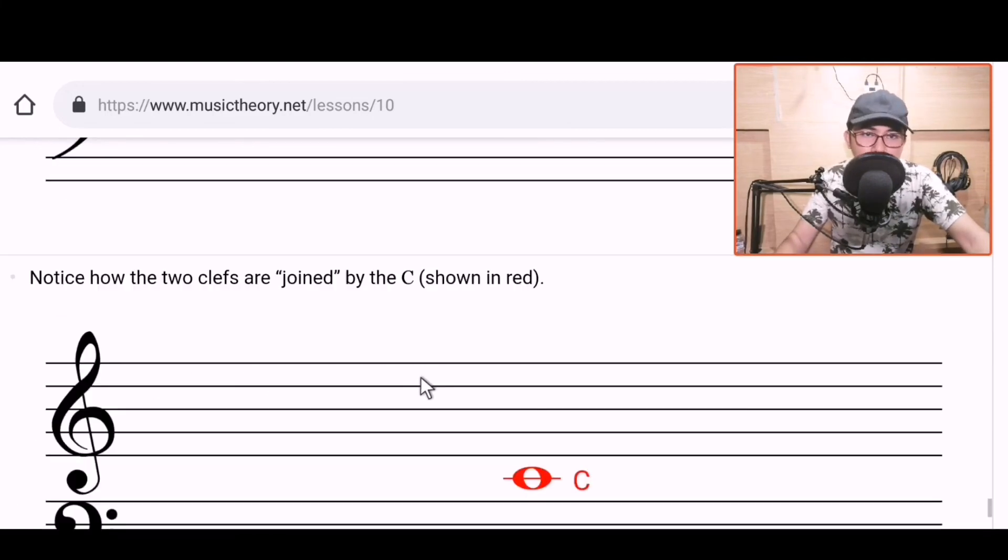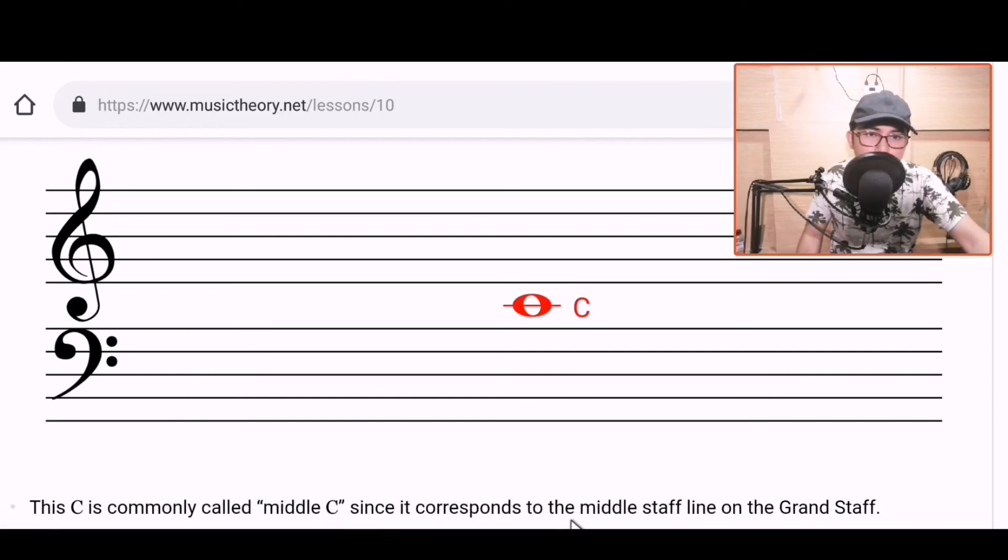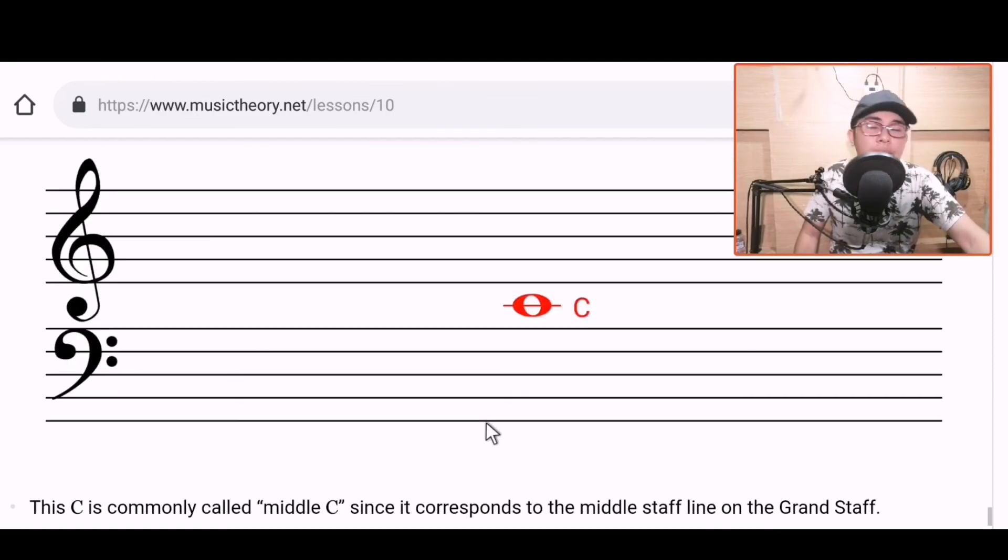Notice how the two clefs are joined by the C shown in red. Okay. So remember we removed a line earlier, the one line in the middle. That is supposed to be the middle C. Okay? So that's what I was saying earlier. Find the do closest to the middle on your piano, on your keyboard. So this is C. This will divide the two staves. It will be the middle. Alright? This C is commonly called the middle C since it corresponds to the middle staff line on the grand staff. So it's called middle C because it's in the middle of the two staves. This grand staff, that's why it's called middle C. Okay? On the piano, we also have middle C, which is the C closest to the middle of your piano. Now, in my case, it's the third C from below: one, two, three. If you're going to play on an 88-key piano, it's on the fourth C from the bottom: one, two, three, fourth C. Okay?